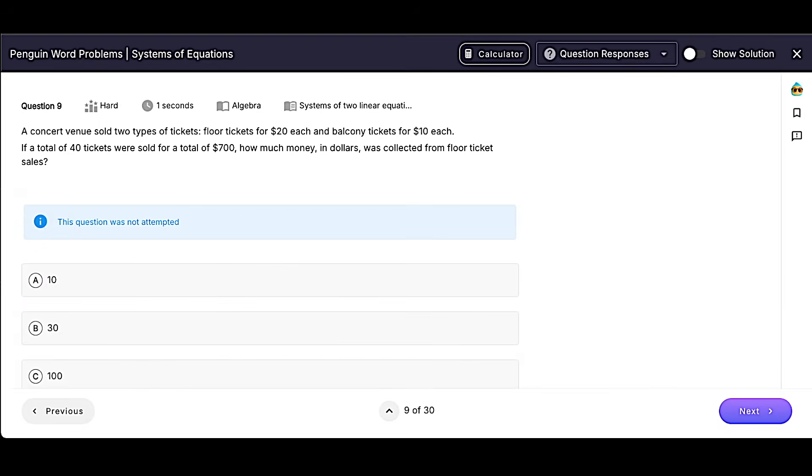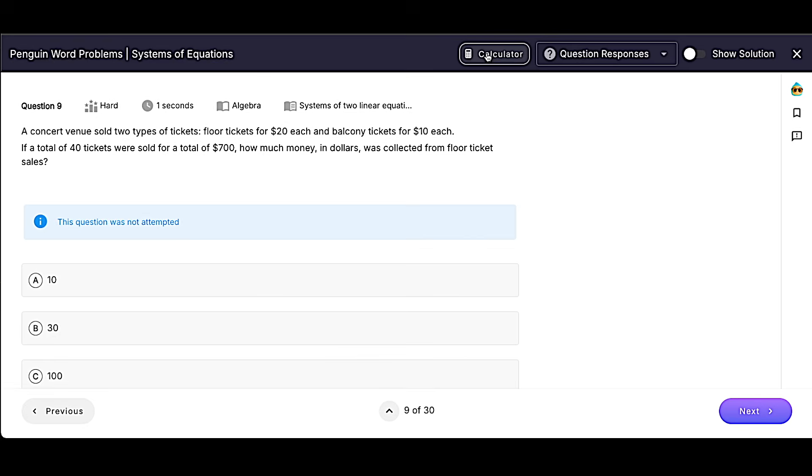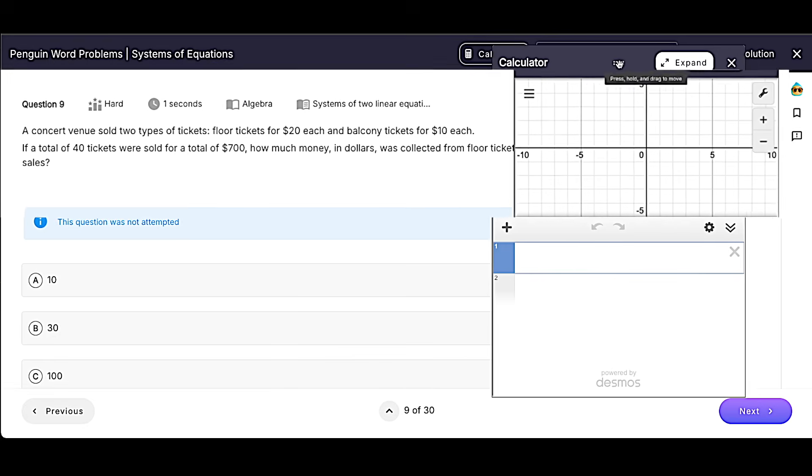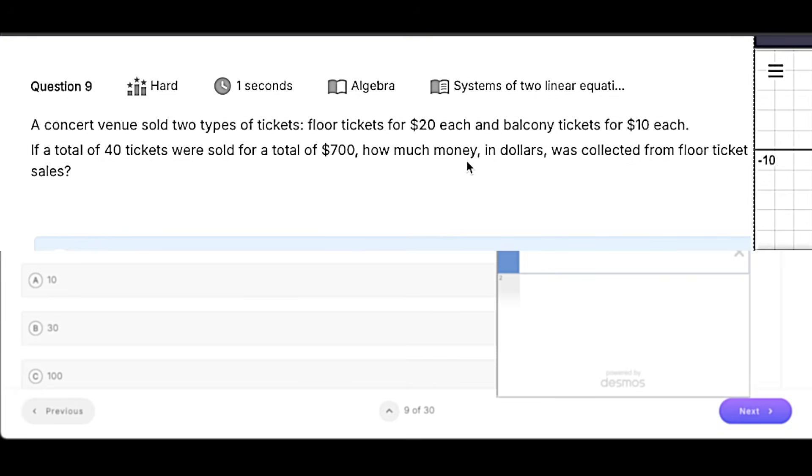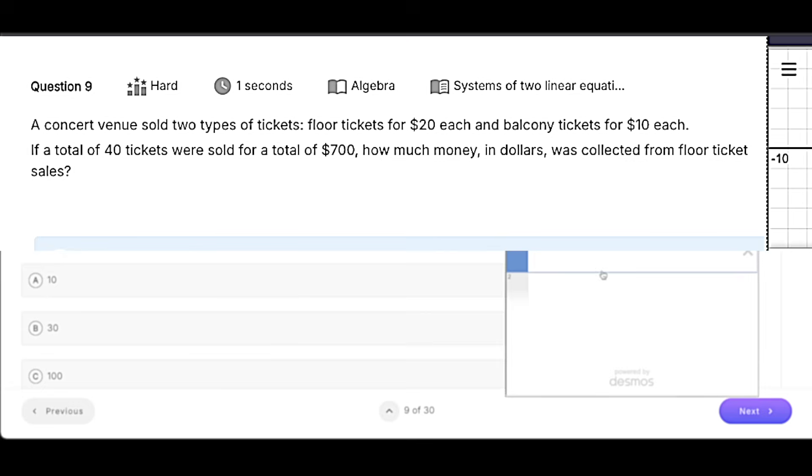All right. I got one more practice question here for you. Go ahead and give it a try. But here we go. I'm going to pull up Desmos. And this time, it says we've got two types of tickets. So it seems like it's going to be those items plus items and values plus values.